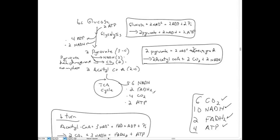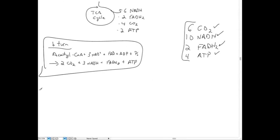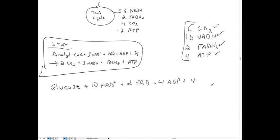The overall reaction formula for complete oxidation of glucose through glycolysis and the TCA cycle is: glucose + 10 NAD + 2 FAD + 4 ADP + 4 Pi → 6 CO2 + 10 NADH + 2 FADH2 + 4 ATP.